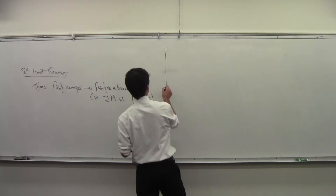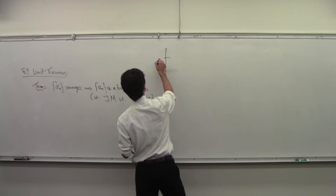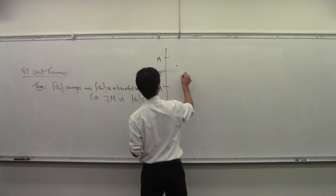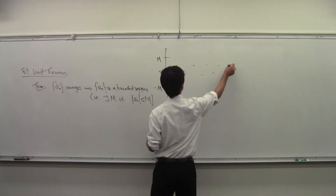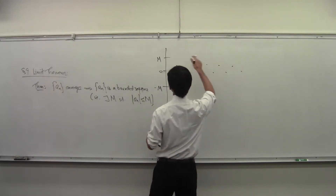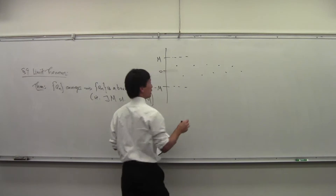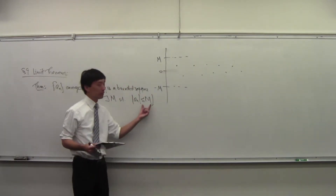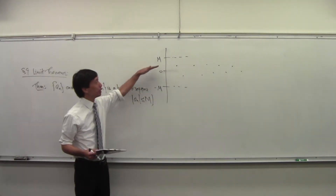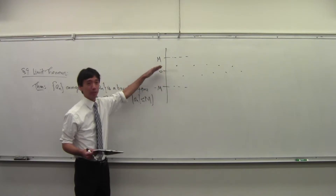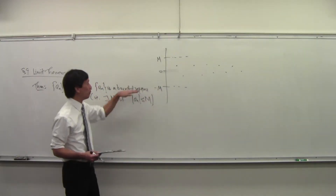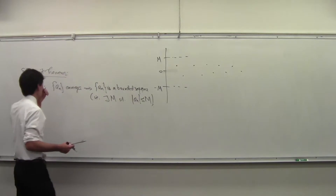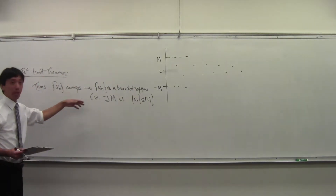So bounded means that there is some M, and your sequence is trapped between M and negative M. Your sequence values are smaller than M in absolute value, trapped between M and its negative. And this theorem is saying that if you converge, then you're bounded.